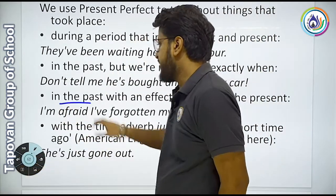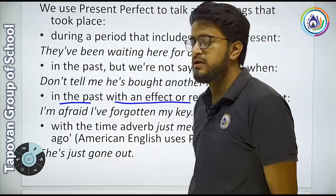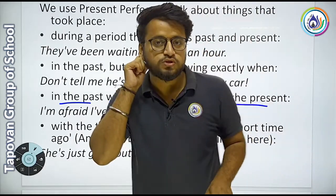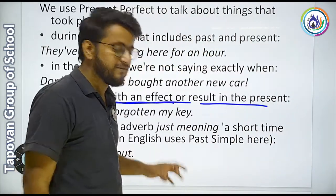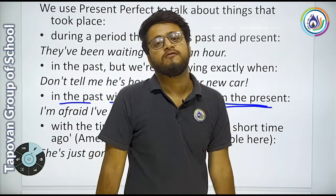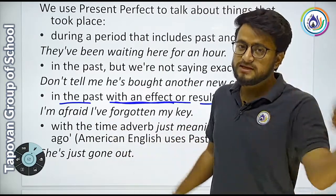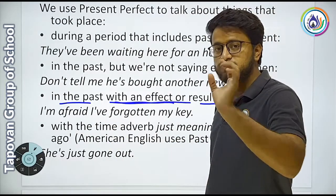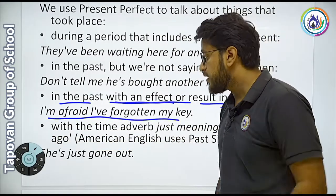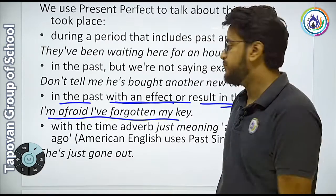Next point, point number 2: in the past, with an effect or result in the present. अब ऐसी चीज़ों के लिए भी जो past में हुई हैं, लेकिन उसका effect — उस past में होने वाली चीज़ों का result — वो present में भी दिखाव कर रहा है. Example: I am afraid I have forgotten. मैं बहुत डर रहा हूँ कि मैंने अपनी key forget कर दी, मैं अपनी key भूल गया.